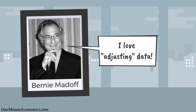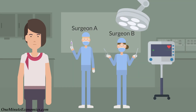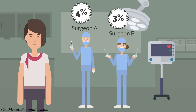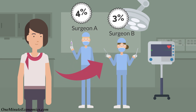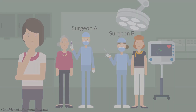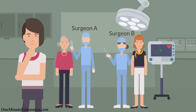The term adjustment may sound manipulative, but in a lot of cases statistical adjustment makes perfect sense. What if you have to choose between two surgeons and know that four percent of surgeon A's patients died during or shortly after their surgery, whereas for surgeon B that percentage is just three percent? Your first reaction — promptly choosing surgeon B — is suboptimal. A wiser approach would be asking for more data.